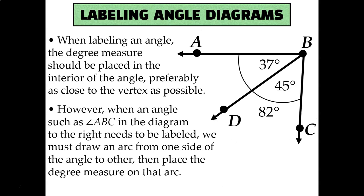I'd also like to take a moment to discuss how we label an angle diagram, because sometimes they can look a little confusing. In order to label an angle with its measurement, you put that measurement in degrees at the vertex of the angle. So here I see a 37 with a little degree symbol, and it's inside of the angle ABD next to its vertex. So that means that the measure of angle ABD is 37 degrees.